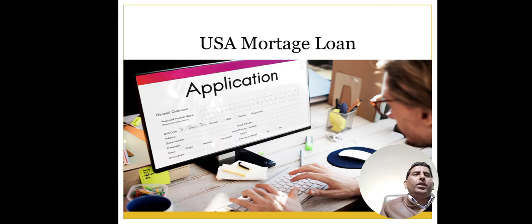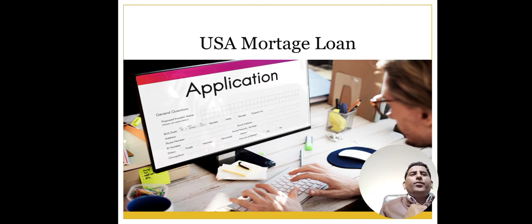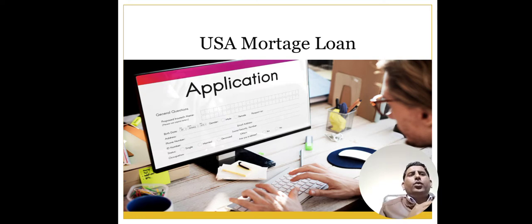The fifth step is to let the process play out. Behind the scenes, your lender will order a home appraisal to ensure that the value of the home you are buying is in line with the purchase price. The appraiser will visit the home and compare it to other recently sold homes in a similar price range. Your lender will also order a title search to make sure there are no outstanding liens on the property.